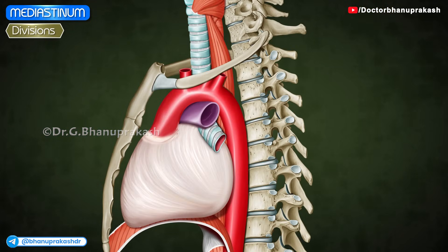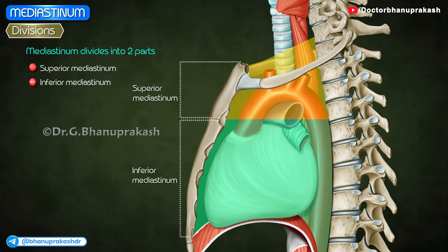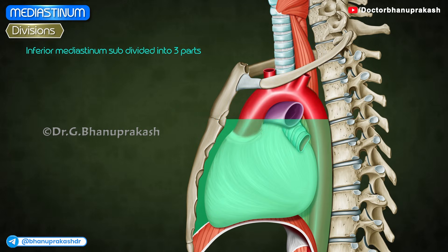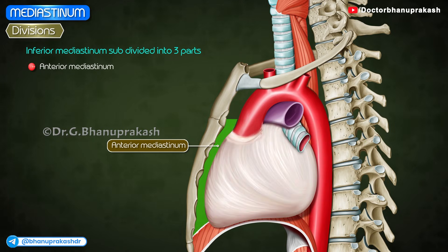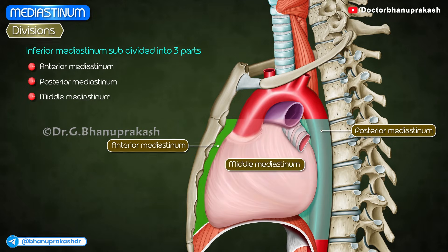Divisions: For the purpose of description and organization of structures, the mediastinum is artificially divided into two parts — superior mediastinum and inferior mediastinum — by an imaginary plane known as the transverse thoracic plane, passing through the sternal angle anteriorly and the lower border of the body of the fourth thoracic vertebra posteriorly. The inferior mediastinum is further subdivided into three parts by the pericardium enclosing the heart. The part in front of the pericardium is called the anterior mediastinum, and the part behind the pericardium is called the posterior mediastinum. The pericardium and its contents, which are the heart and roots of its great vessels, constitute the middle mediastinum.